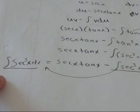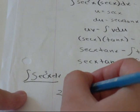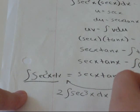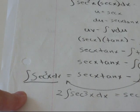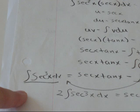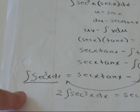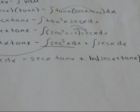I'm going to pull it over to this side with the other secant cubed x dx. So I'm going to get 2 the integral secant cubed x dx equals secant x tan x plus what's the integral of secant x dx? Well, that's just one you have to memorize.